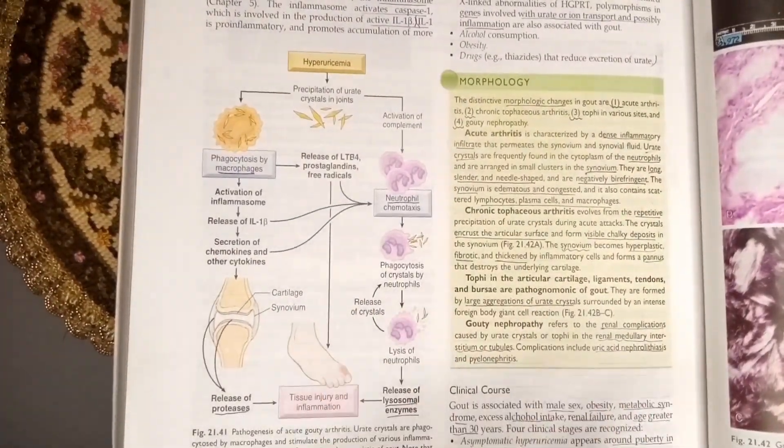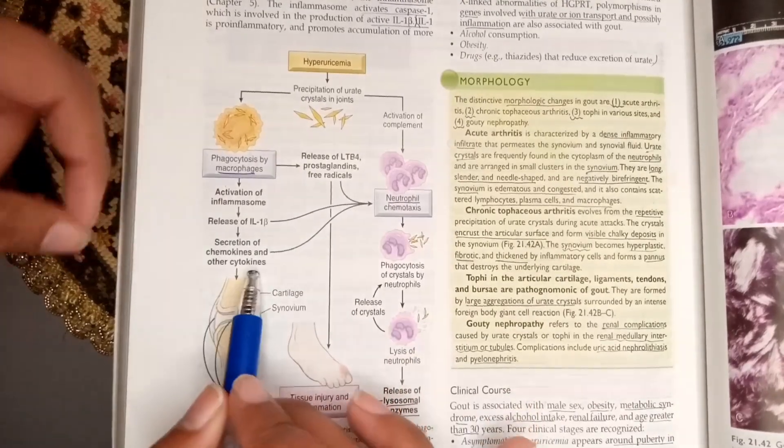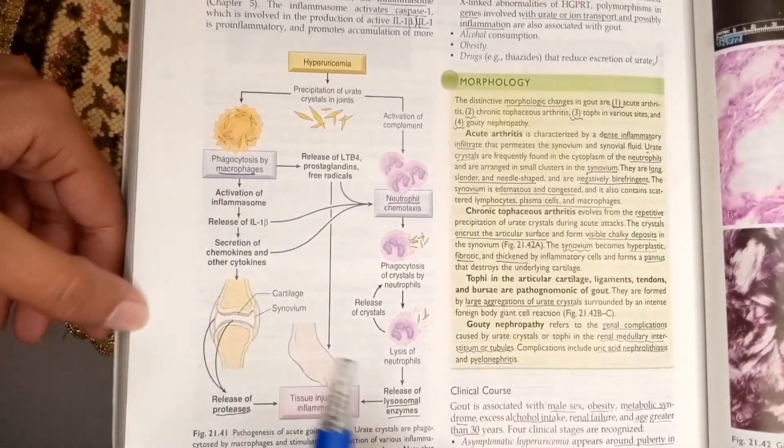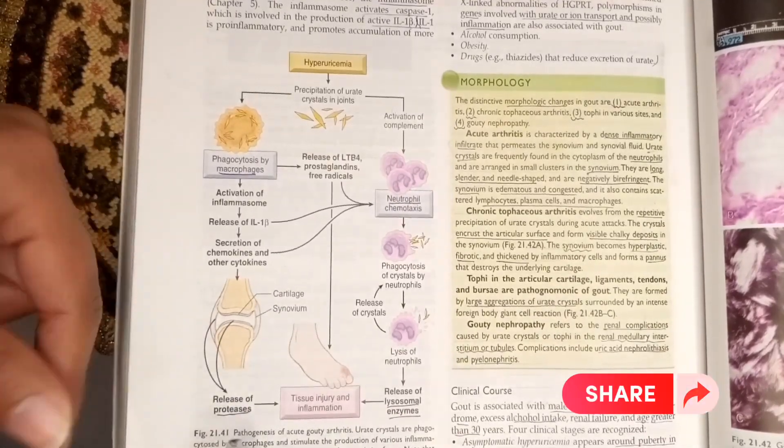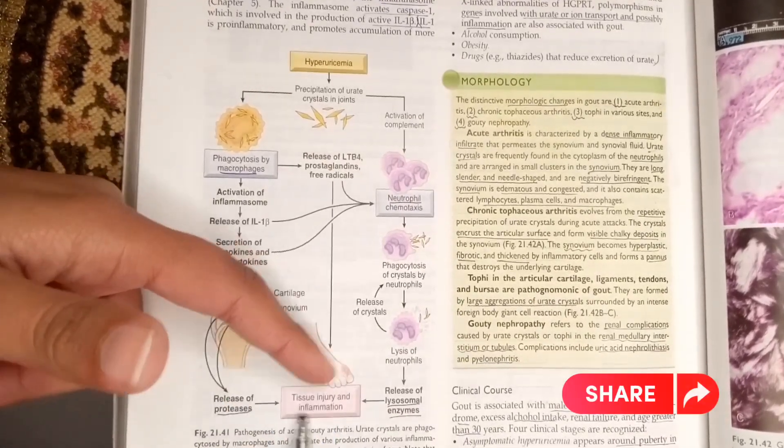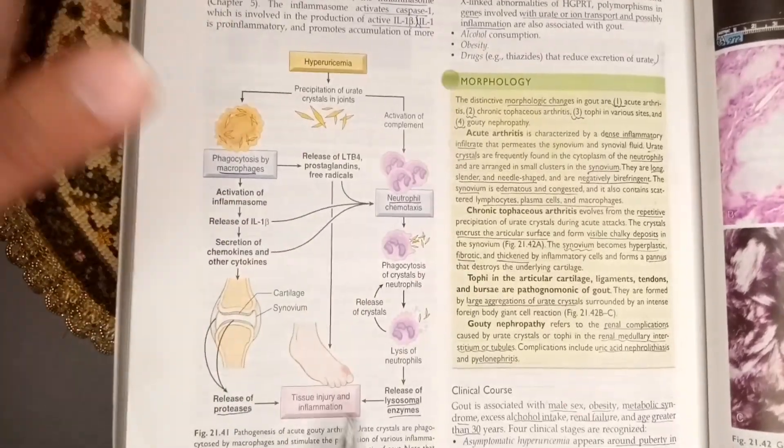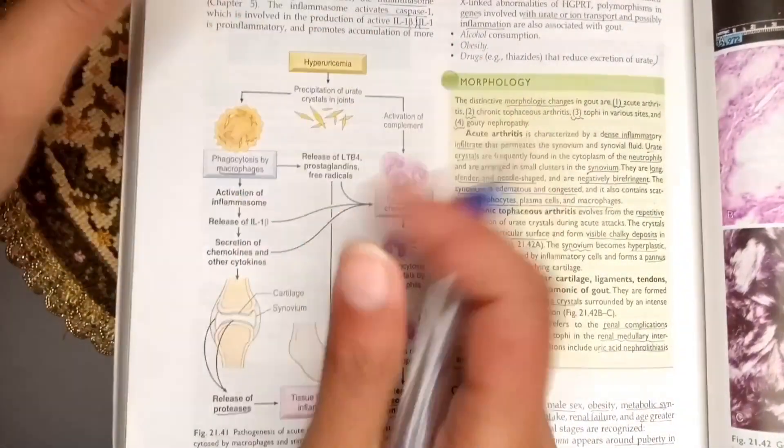These chemokines and cytokines stimulate the cartilage and synovium to release proteases, and these proteases cause tissue injury and inflammation. There are also some other pathways involved.